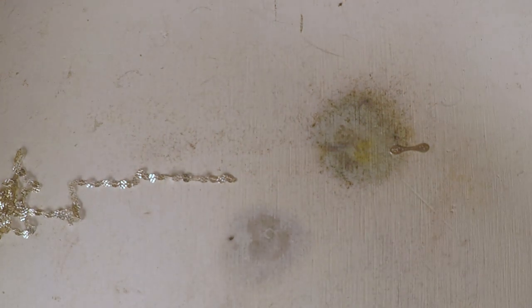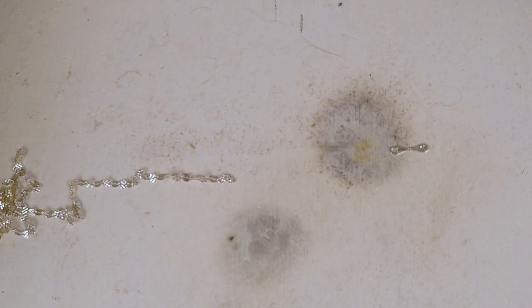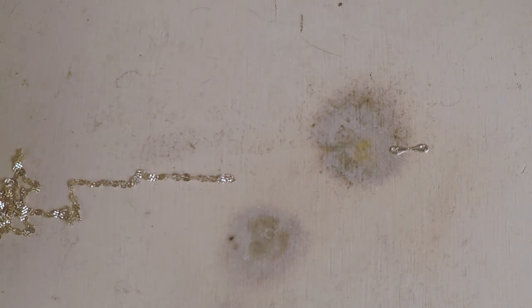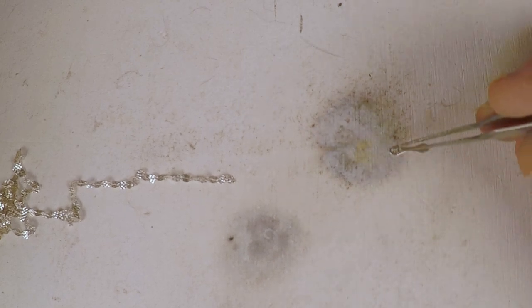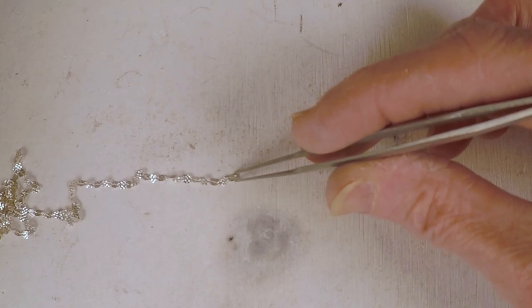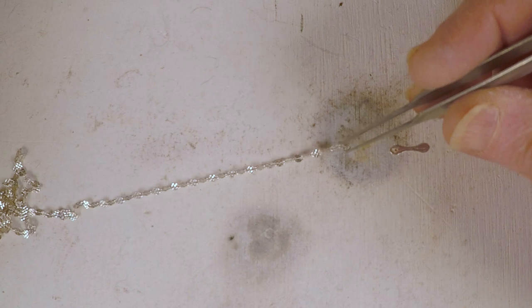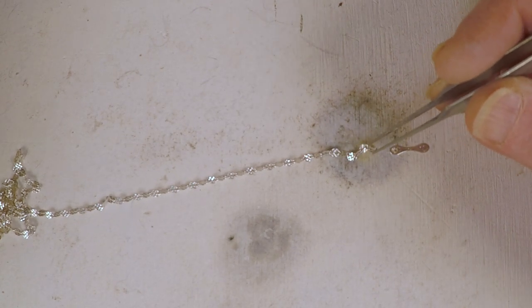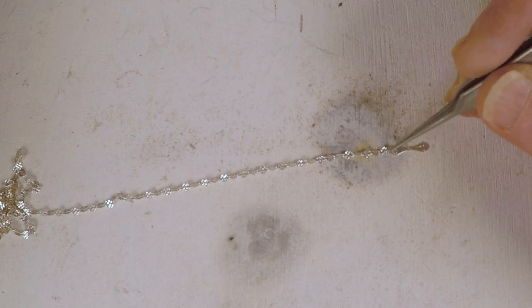Go ahead and flux your end tab and your chain. I'm going to take a piece of soft solder and place it right there on one end of the end tab. Now I'm going to bring the sequin chain over to it, so I'm going to drag it over and lay that last little sequin on top of that.